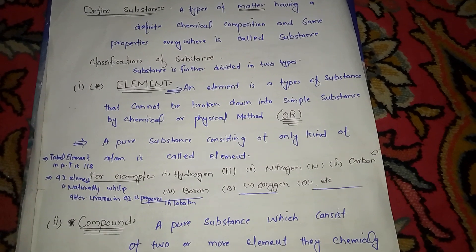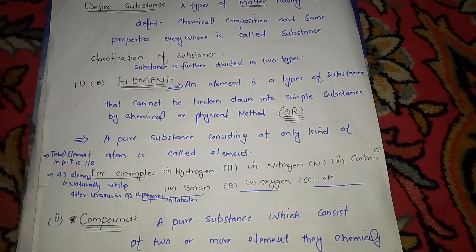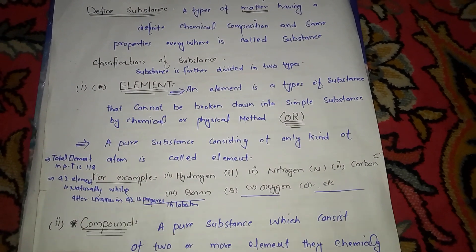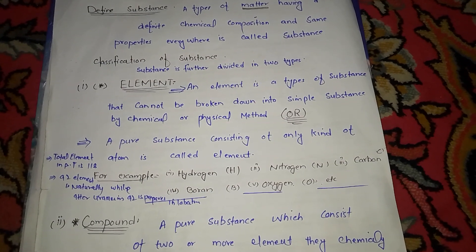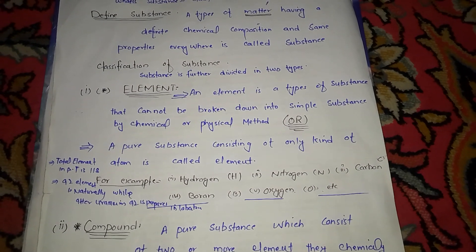Total number of elements in periodic table is 118. Ninety-two elements are naturally occurring elements.